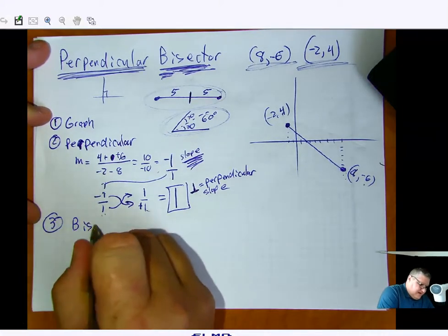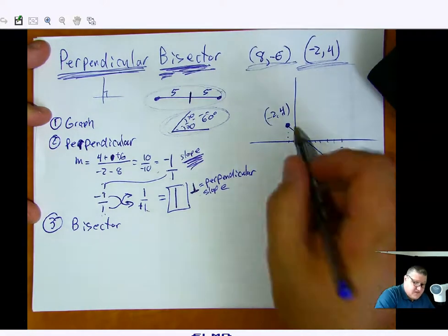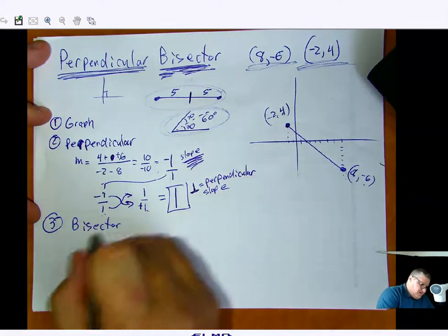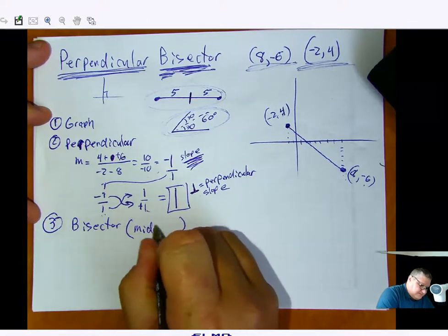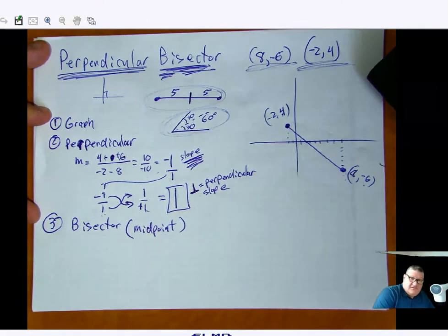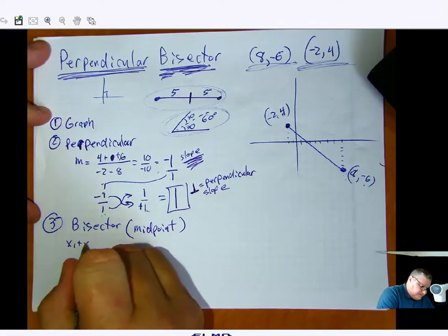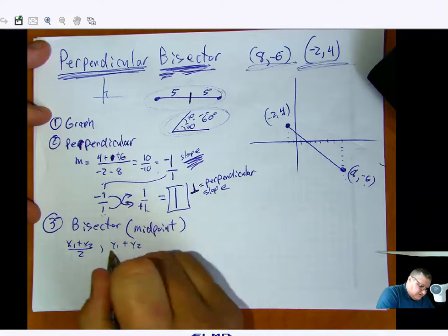So now I need the next part. I need the bisector. Well, bisector means I need to find how to cut this in half. What do I know about cutting something in half? Well, I know midpoint. So with midpoint, I can easily do this. x1 plus x2 all over 2, comma, y1 plus y2 all over 2.